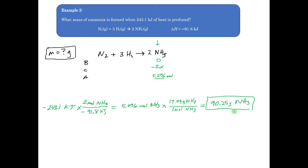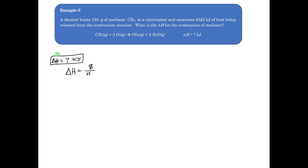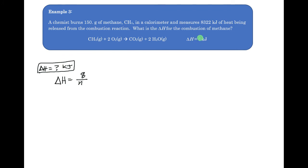Take a look at that and compare it to the last one — you can see how the flow of the problem works; it's the complete opposite. For the third example, we're trying to find the change in enthalpy going into this reaction. We can find this number by using calorimeters, which measure heat transfers. The scientist takes 150 grams of methane, places it in the calorimeter, performs a combustion reaction, and it produces 8,322 kilojoules of heat. We want to use this to figure out how many kilojoules of energy is used per mole of methane.